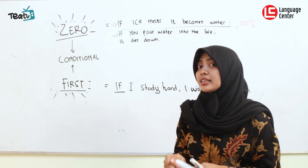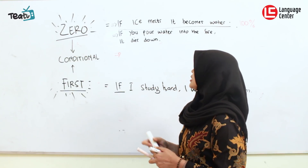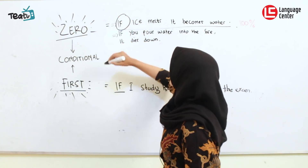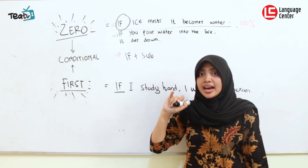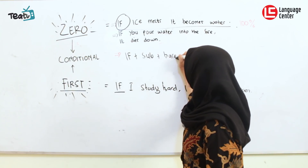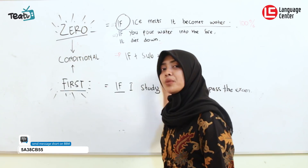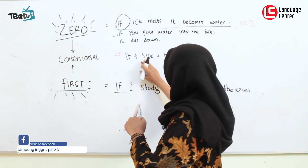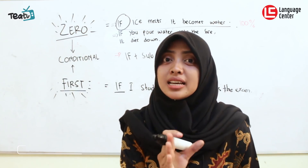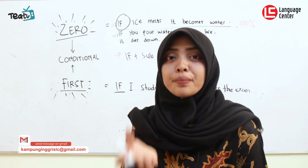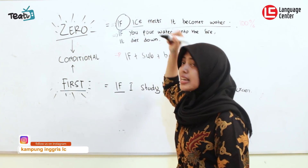So the pattern is like this. How to make the zero condition? Pay attention to the pattern below. There is 'if', then if plus subject — the subject can be 'ice' — followed by the verb. The verb here depends on the subject. If the subject is 'I', 'you', or 'we', use the base verb (infinitive). But if the subject is 'he', 'she', or 'it' (singular), then use verb with s/es. For example: if ice melts — we use 'melts' because 'ice' is 'it'.